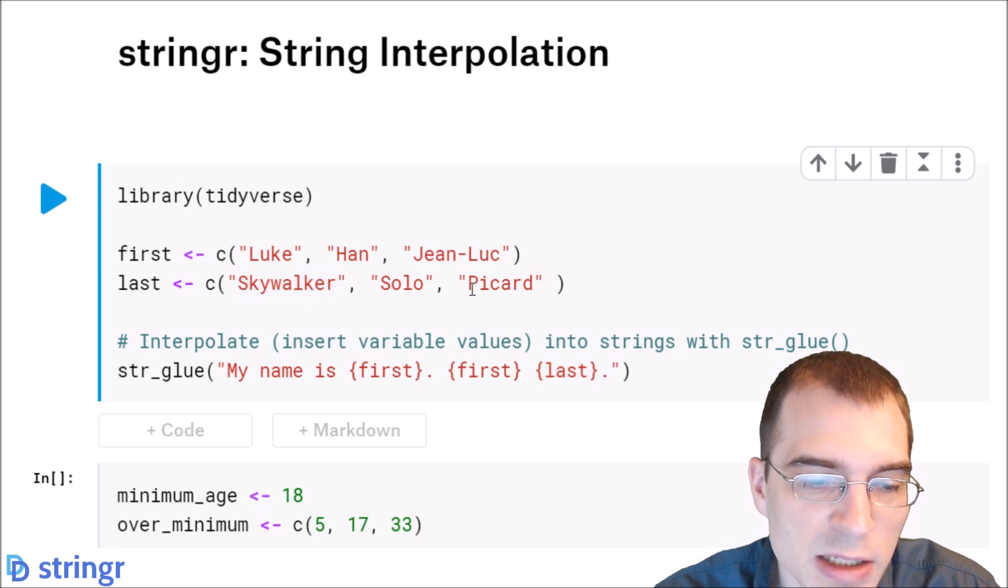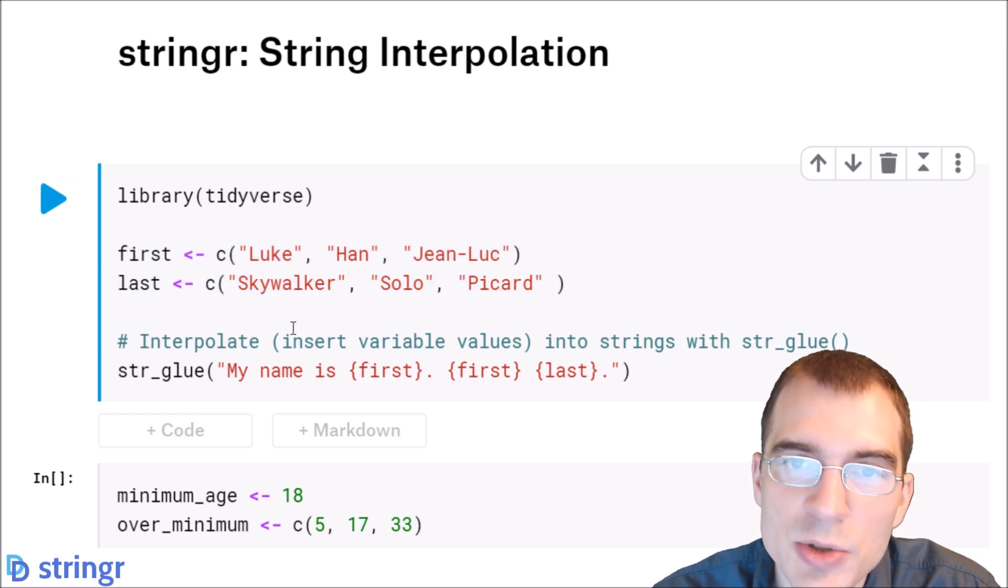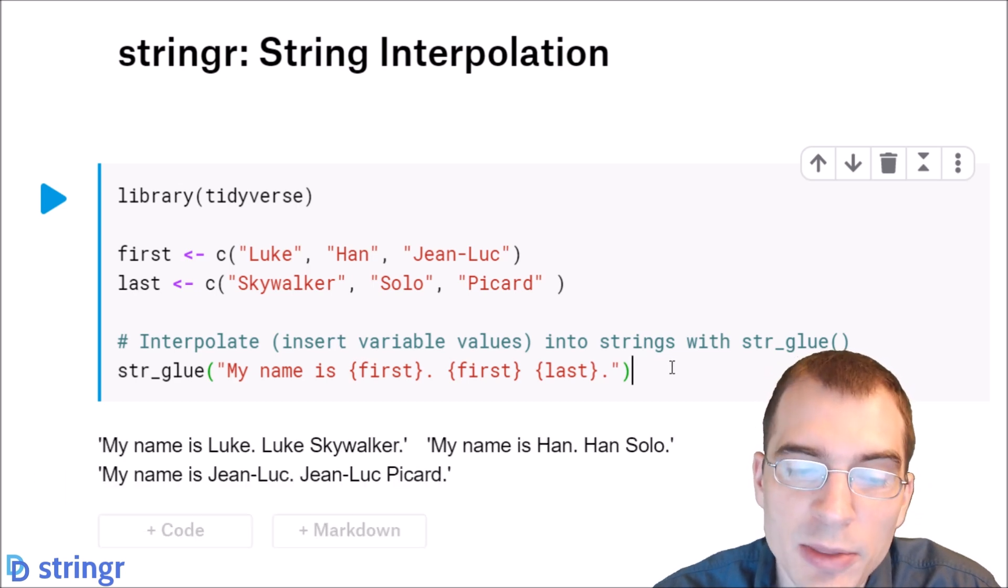And since we're passing in vectors, we're actually going to give back three results. It will do this in an element-wise fashion. So str_glue is going to do this three times one for each of these names. So we'll just run this and see what the result is. As you can see, we got back three different strings, and the values have been interpolated that are filled in based on these vectors that we created.